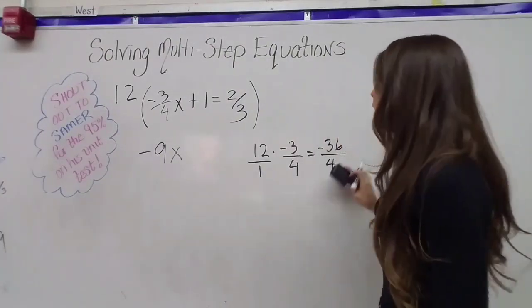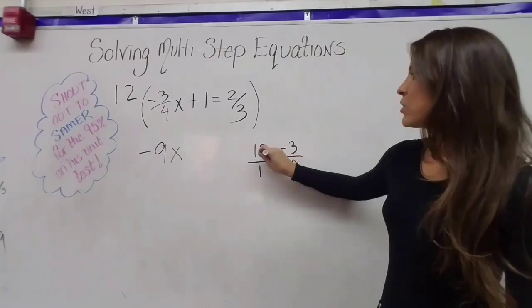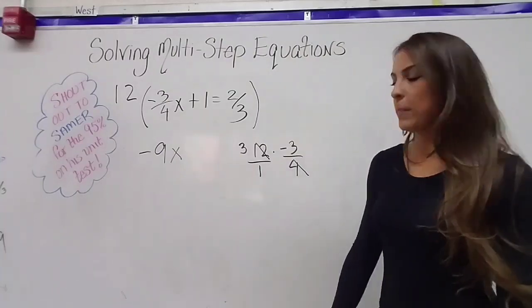Again, the shortcut, the better you get at this, the faster your math will go. Four goes into 12 three times. Three times negative three is negative nine. A little bit quicker.